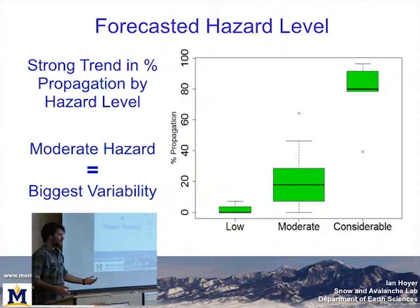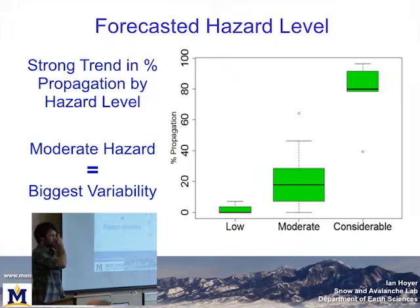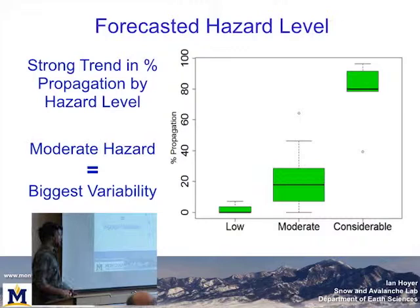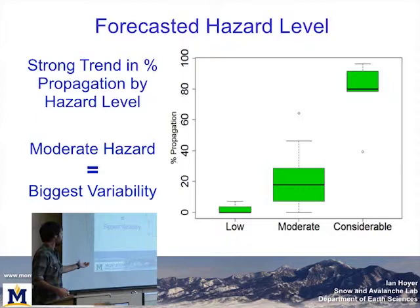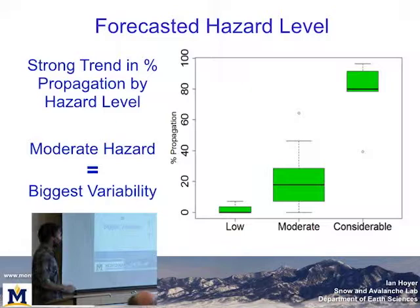The first result that showed me something was taking the forecasted hazard level for the type of slope I was on from the avalanche center, and plotting the percent of my ECTs that propagated. When forecasters called for low danger, I was never getting more than about 10% of my pits propagating. When they called for considerable, I was always above 80%. Unfortunately, it's the moderate hazard days that are hardest — on a low day there are other signs, on a considerable day you might see natural activity, but this moderate range is also when I was seeing the biggest variability and the most false stables.